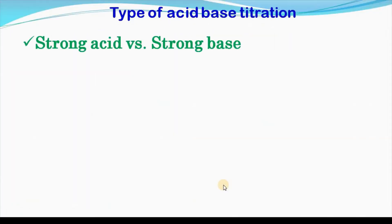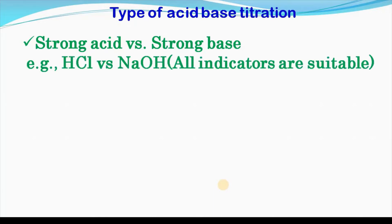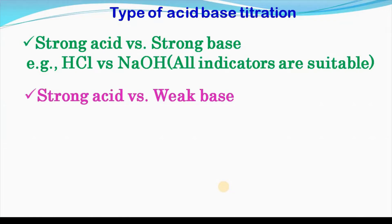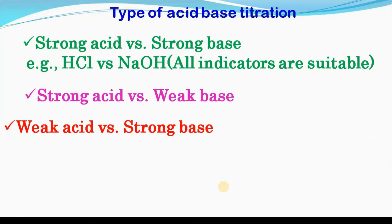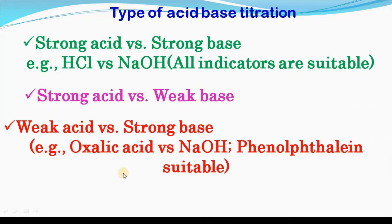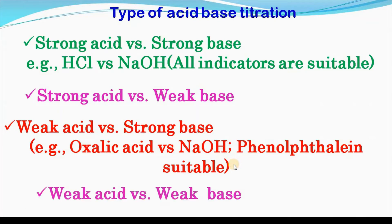There are four types of acid-base titration. One is strong acid versus strong base, which has been explained in my previous videos. Then strong acid versus weak base. Then weak acid versus strong base — for example, oxalic acid versus sodium hydroxide, where phenolphthalein is suitable. Then weak acid versus weak base.